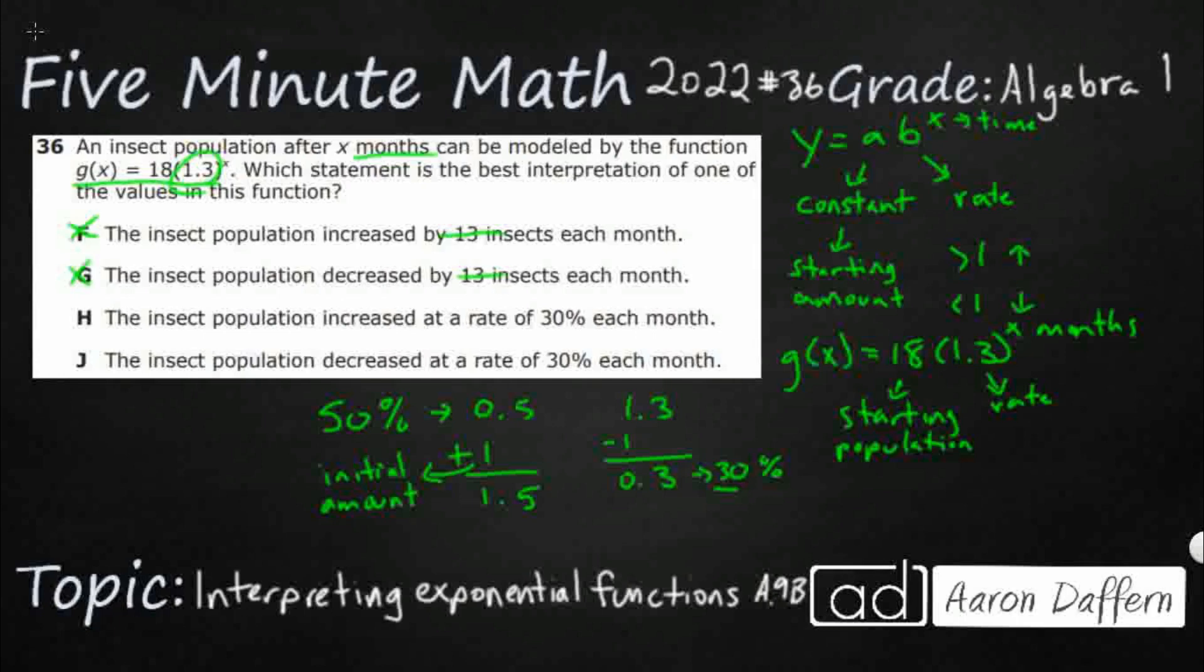Now, look at H and J. It increased or decreased? Well, it increased at a rate of 30% because once we took the 1 away, it's 30%. If you want to decrease at a rate of 30%, this is what you do: you do your 1 and then you take away 0.3, so you would end up with 0.7. So if you want a decrease, that's what you would get. Our answer is H.